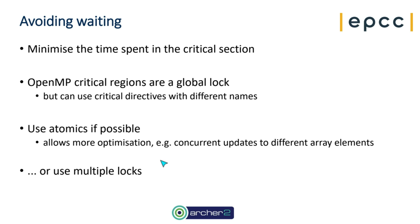When you can't use atomics — because your operation isn't a simple update to a basic type — you may need to use lock routines, and you can use multiple locks. A classical case is particle codes where you have a structure representing a particle that needs to be accessed by one thread at a time. You can associate one lock variable with every particle and include it in the data structure for convenience.